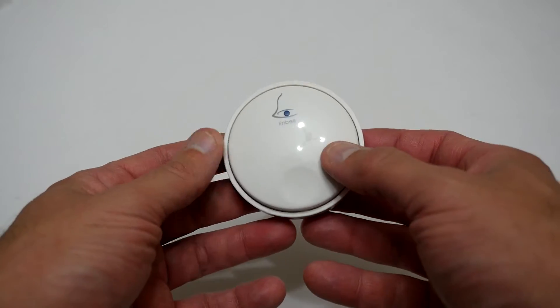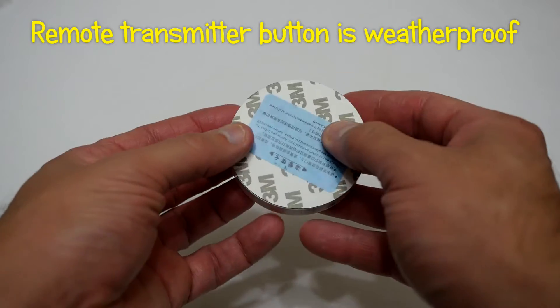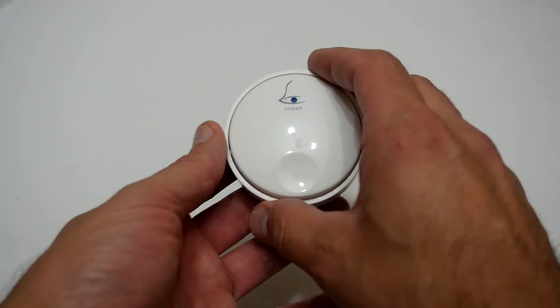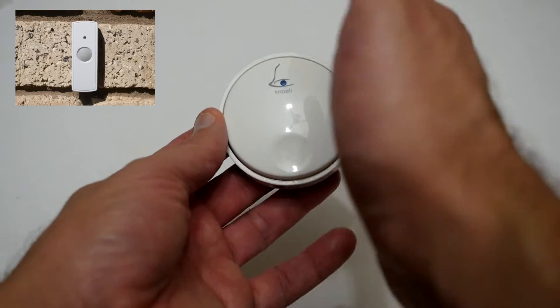Okay so first of all we've got the transmitter which I've brought out the box and basically it's quite compact but it's round so it's a bit unusual because it's a bit larger than maybe your normal doorbell which will be more rectangle shaped.